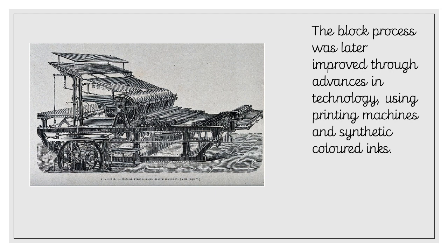This is an example of the printing machine that would have been used to make William Morris's wallpaper. It would have used synthetic coloured inks — so they are not natural coloured inks, they would have been created artificially — and that is what happened later in his life as those developments progressed.